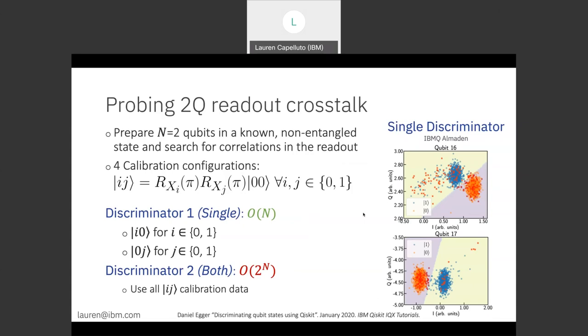We selected two qubits randomly for this experiment, qubit 16 and 17 on IBM Q Almaden. And what we did was set up four different configurations of these qubits, all four where we have four product states.